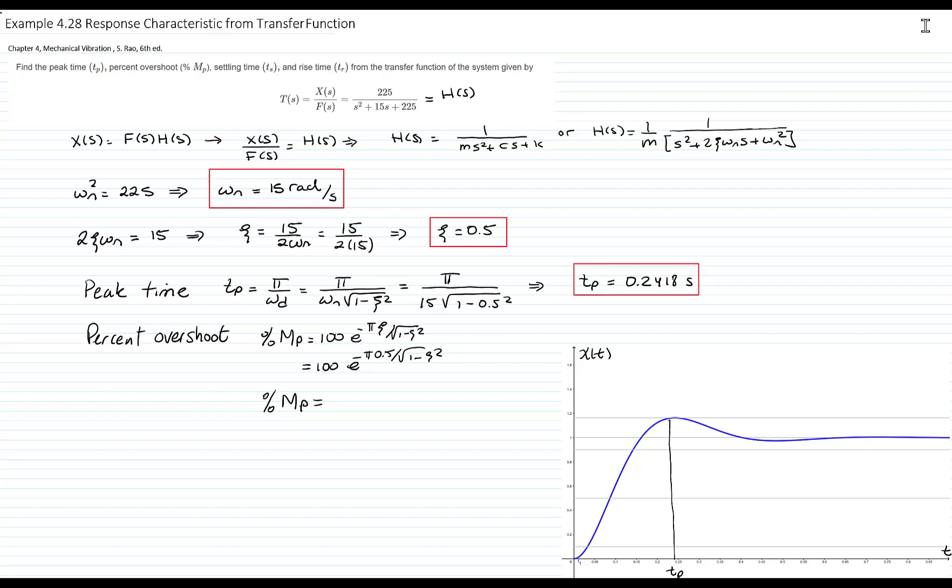And that gives me a value of 16.3034. And in the graph, this represents the value that is above the final settle response. So it's the peak value.